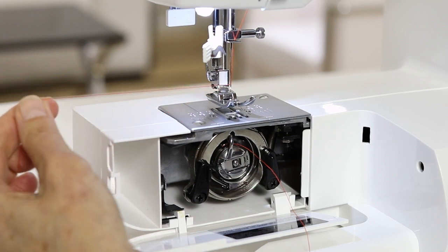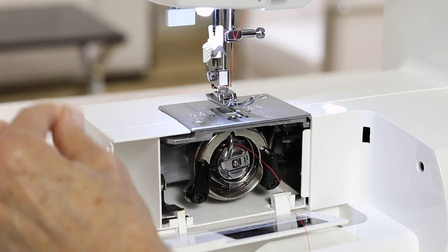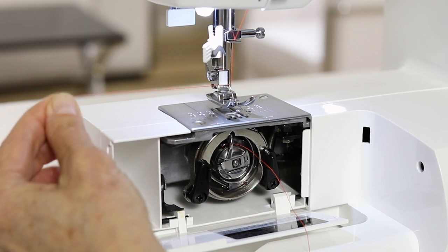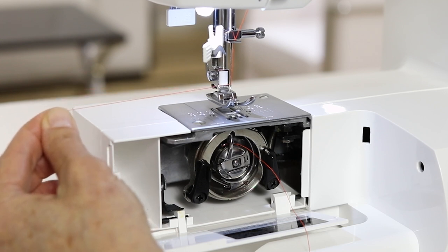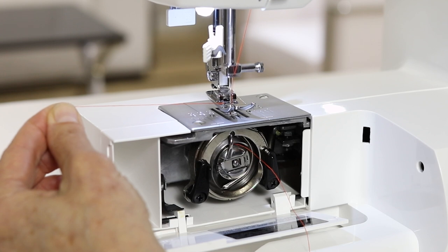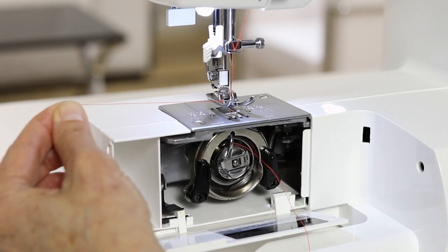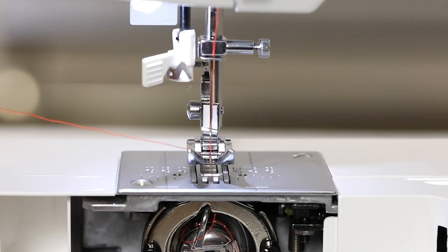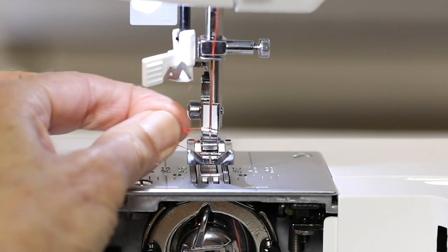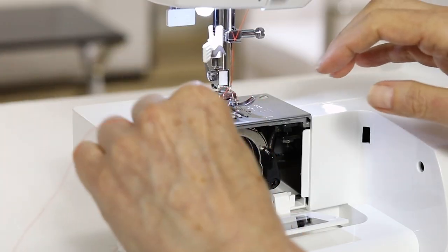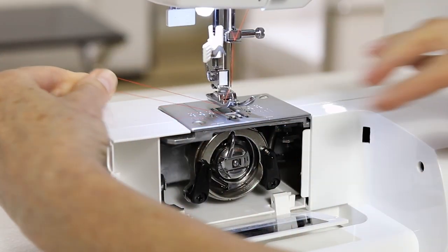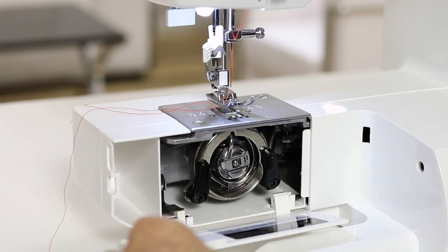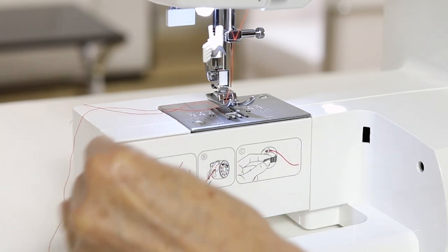The next thing we have to do is draw up the bobbin thread. So hold the thread with your upper thread with your left hand. Turn the hand wheel toward you until it goes down and comes back up, lightly pulling with your left hand until you see this loop come up. Grab the loop, pull it through and place both threads underneath the presser foot, close the cover and we're ready to sew.